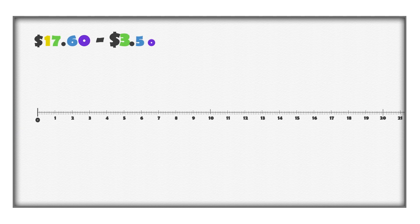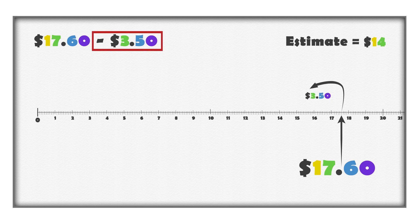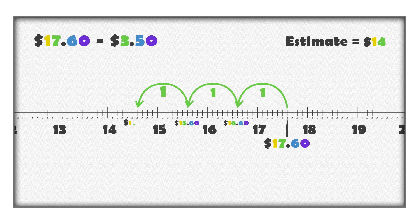Another way to subtract these numbers is to represent them on a number line. Place $17.60 on the number line. We want to subtract $3.50 — the answer will be $3.50 less, or a value to the left, of $17.60 on the number line. Start by removing $3.00, which is the same as moving three spaces to the left. We are now at $14.60. $17.60 minus $3.00 is $14.60.